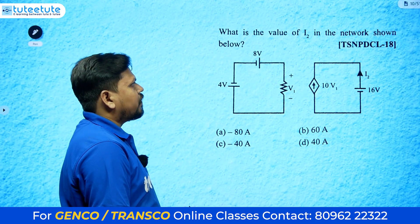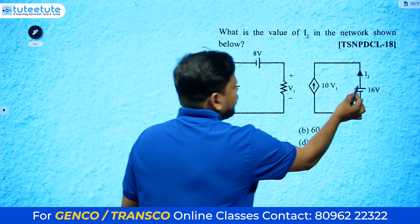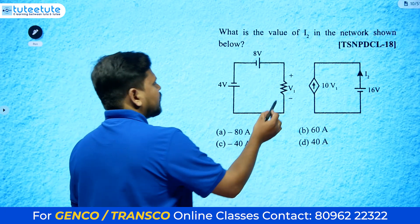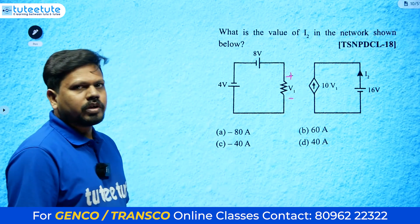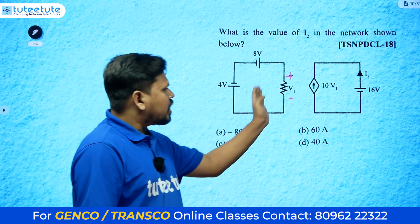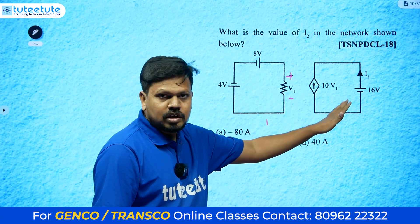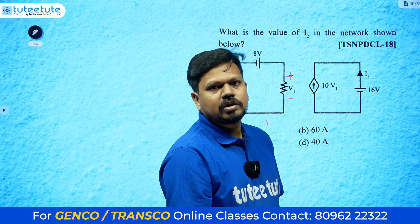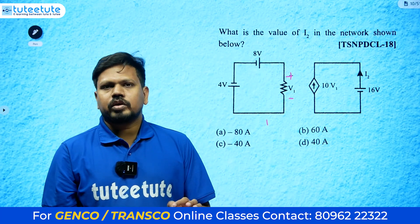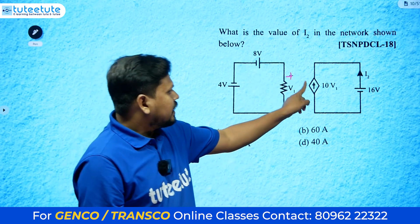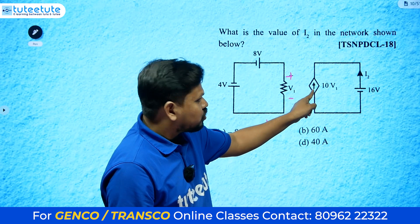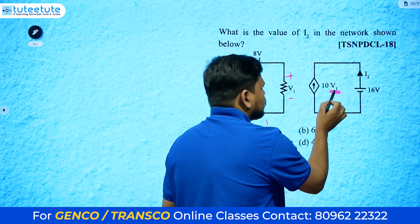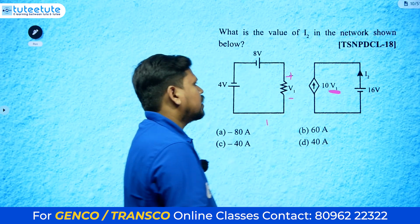The next question asks for the value of i2 in the network shown. First calculate v1. There is no wired connection between the two parts of the network, no transformer, no induction — yet one side has a dependent current source that depends on voltage v1 from the other side.